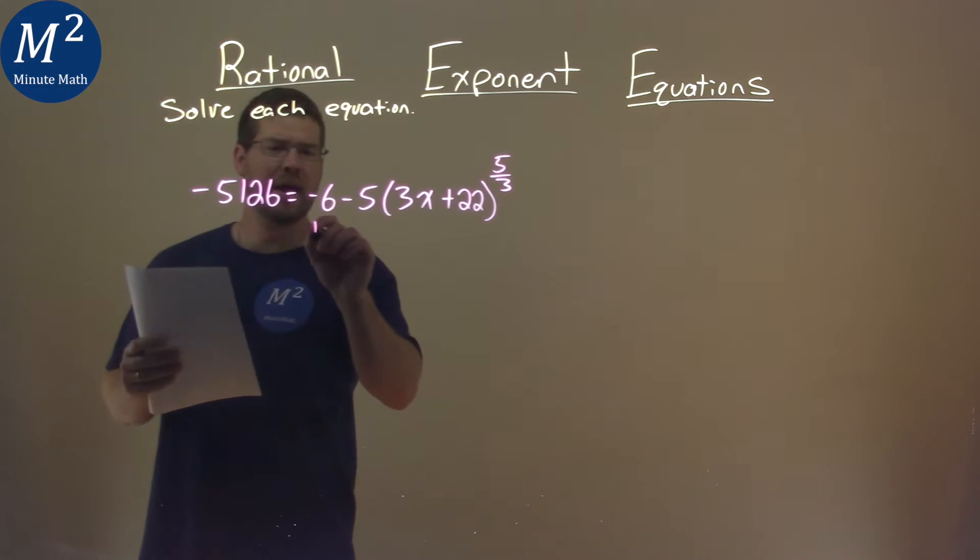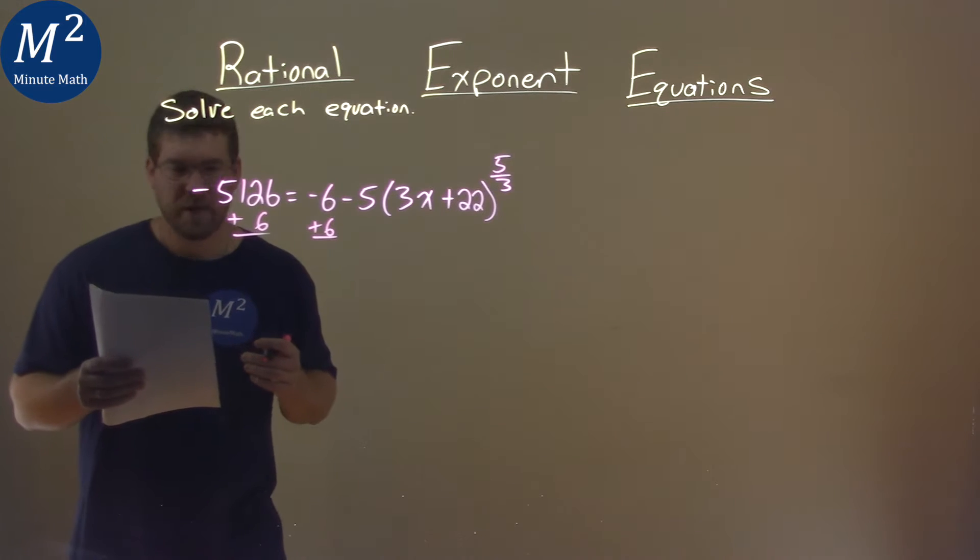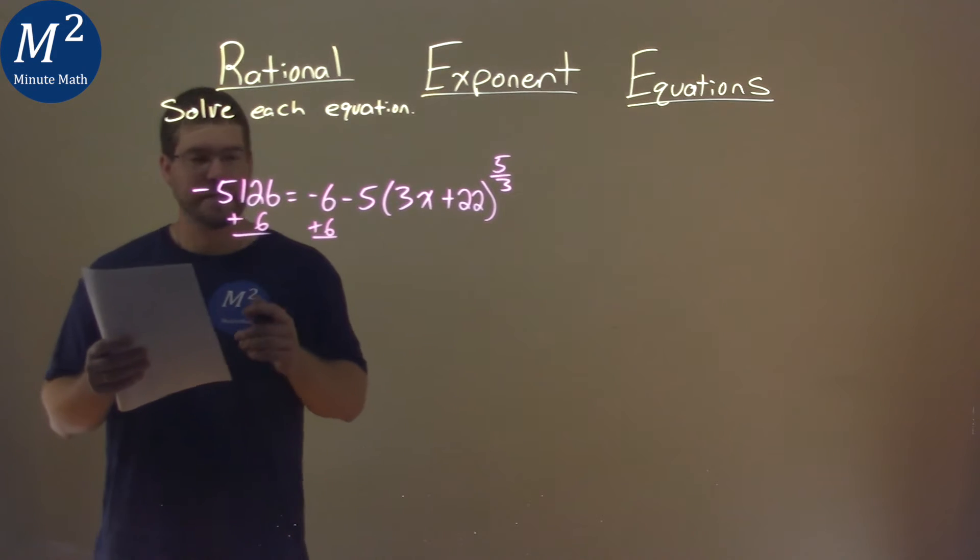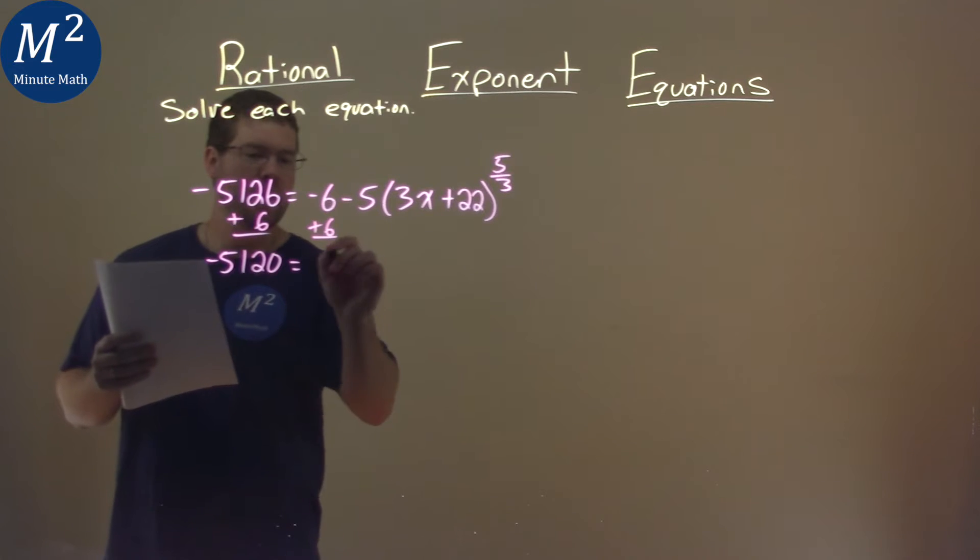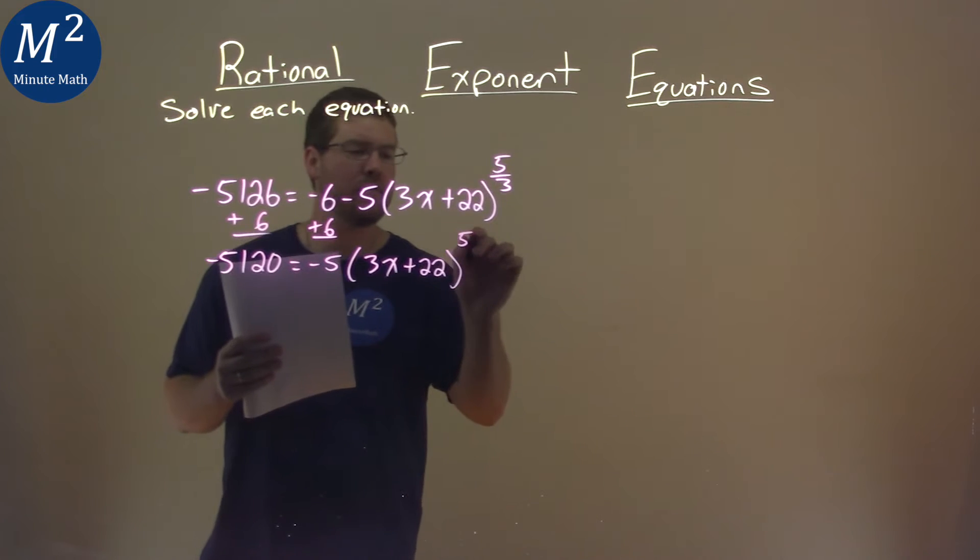First, let's add 6 to both sides to get our variable by itself. Negative 5,126 plus 6 is negative 5,120. That equals negative 5 times the quantity 3x plus 22, all to the 5/3 power.